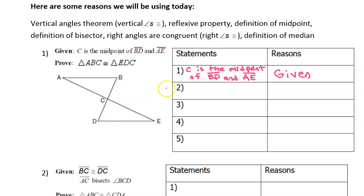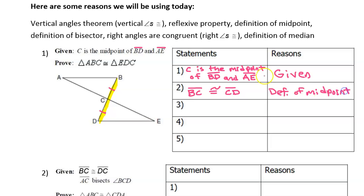So if C is the midpoint of segment BD — here is segment BD right here — if C is the midpoint of that, then BC is congruent to CD. So we need to write that down: segment BC is congruent to segment CD. The reason will be the definition of midpoint. If you are ever unsure what the reason should be, take a glance at the previous statement and that will give you a hint. In this case the previous statement mentioned the word midpoint, so the reason is going to be definition of midpoint.